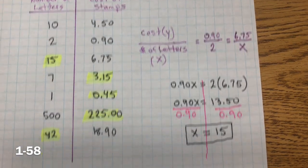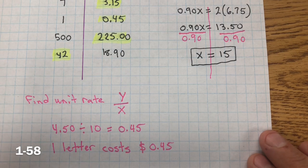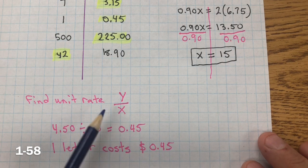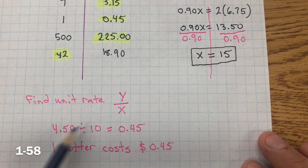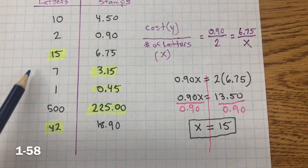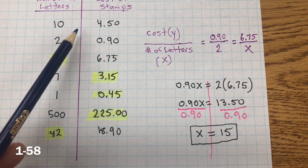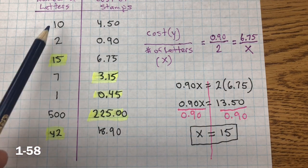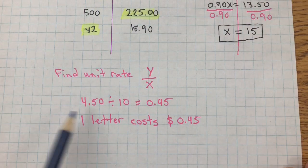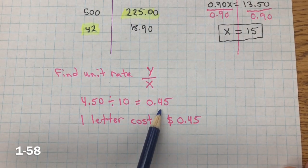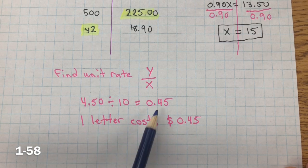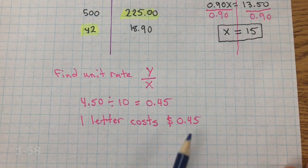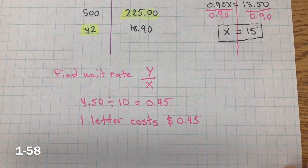So, another way of doing this is to find the unit rate. Once you know the unit rate, you can find the cost for any number of letters. So, unit rate, I can take any of the values that were given and just divide it. So, 400, so y over x, $4.50 divided by 10. Or I can do 90 cents divided by 2. And you can see that I would get 45 cents. So, if I did 90 cents divided by 2, I'd still get 45 cents. So, it doesn't matter which two I use. So, one letter costs 45 cents. I can use that to find the cost for any number of letters.